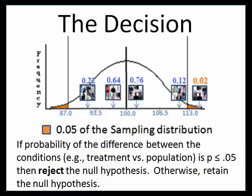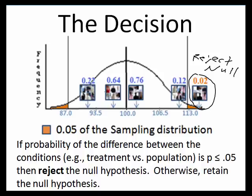Looking at our example, we have one situation where we'll reject the null hypothesis. The difference between this sample and the general population could be due to sampling error — it could have been true before they drank the vitamin water — but the probability of getting a difference this big due to chance is only 0.02%, which is less than or equal to 0.05, so we reject the null. For the other four samples, you could get sample means that distant from the population mean just due to chance fairly easily, so for those cases we would retain the null.